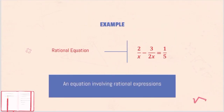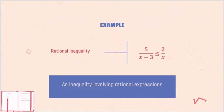Here's an example of a rational equation: 2 over x minus 3 over 2x is equal to 1 fifth. Take note that the rational equation has an equal sign. Here's an example of a rational inequality: 5 over x minus 3 is less than or equal to 2 over x. As you can see, there is a presence of an inequality symbol, so this could also be greater than, less than, or greater than or equal to.